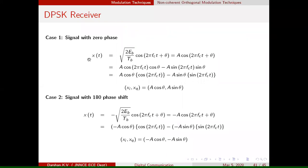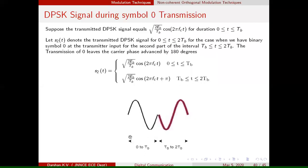X(t) is the received signal. For every time interval, we receive one signal, but for our analysis we need to analyze over two symbol intervals. For every time interval we get one signal — from 0 to TB you get one signal, and from TB to 2TB you get another signal.